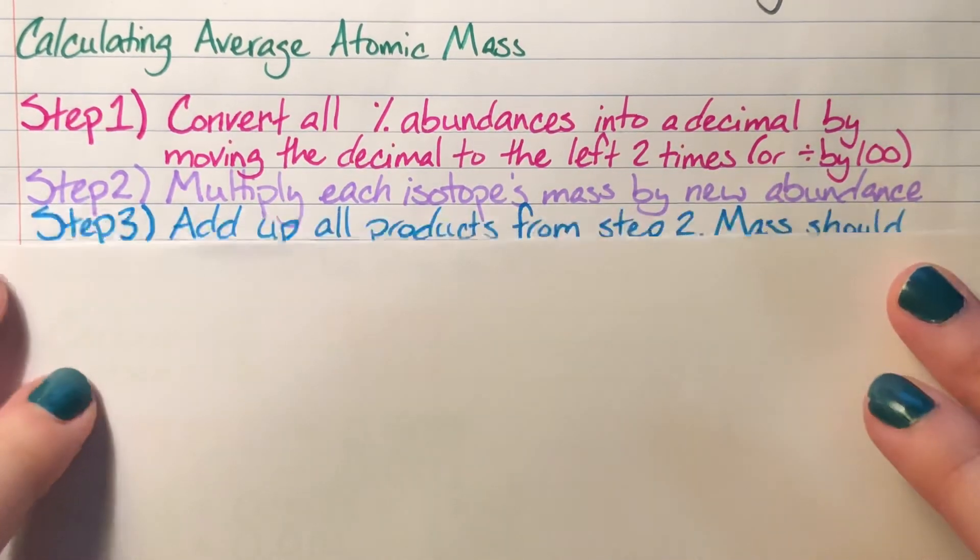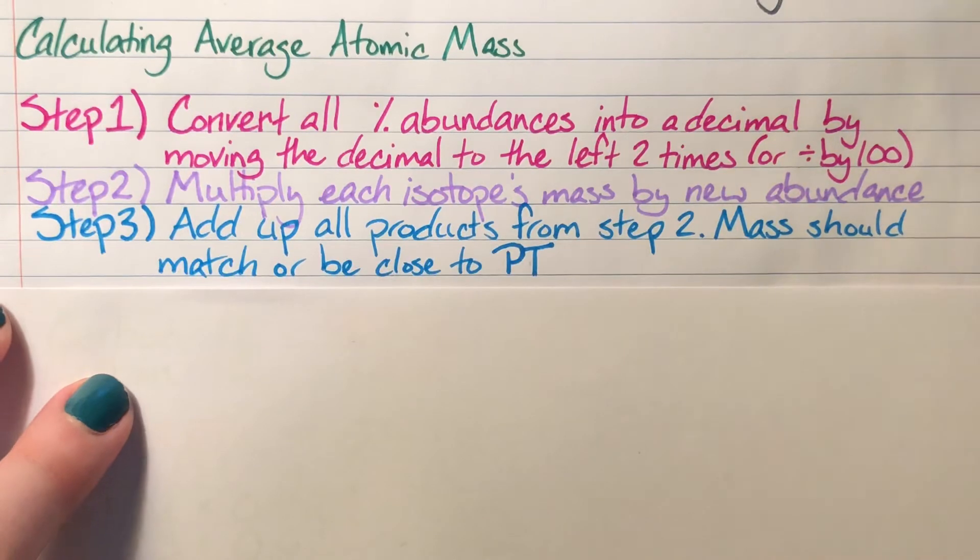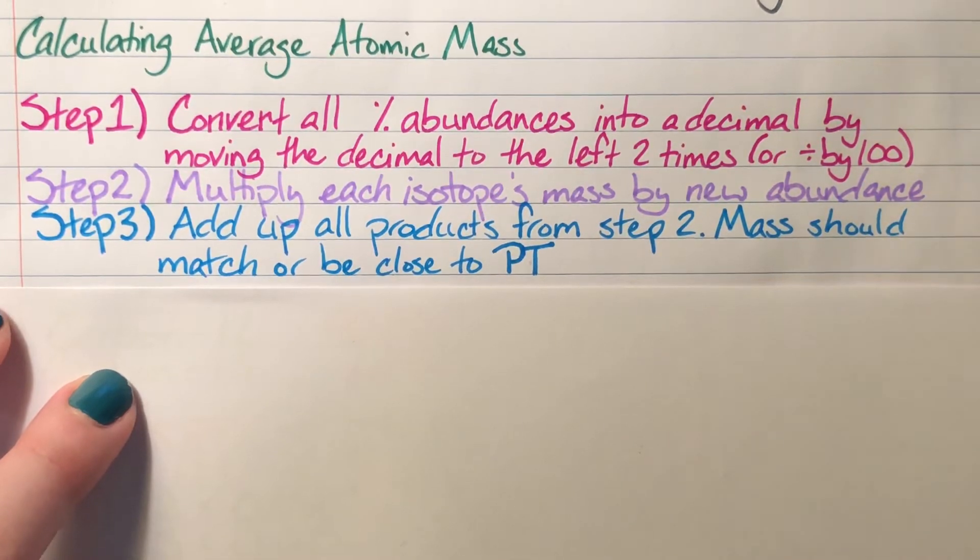Step three is to add up all the products from all the abundances and all the isotope's individual masses, and check to see if we are close to correct. If we are correct, our products should be approximately the same number that we find on the periodic table.